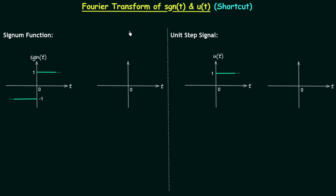In the previous lecture we calculated the Fourier transform of the unit step signal. In this lecture I will give you one very important and powerful method to calculate the Fourier transform. This method is mainly used when the given signal is related to a step, a ramp, or both. The method is useful because it reduces the calculations and complexity of the problem.